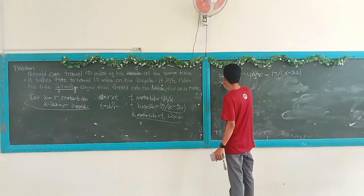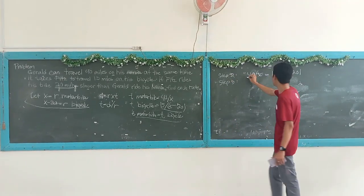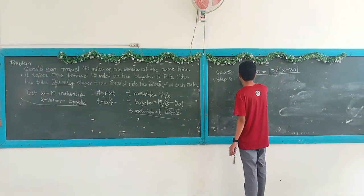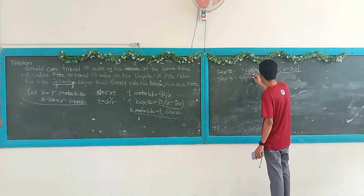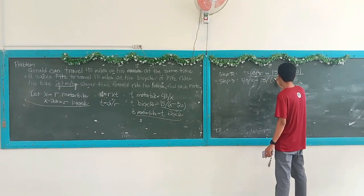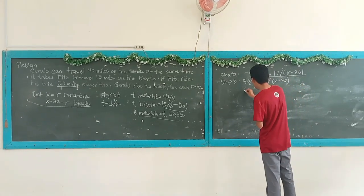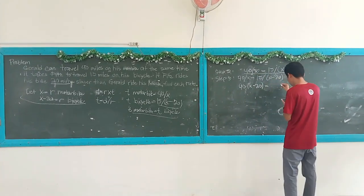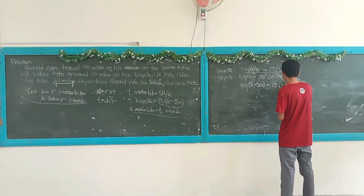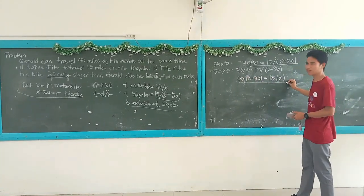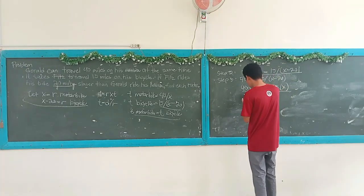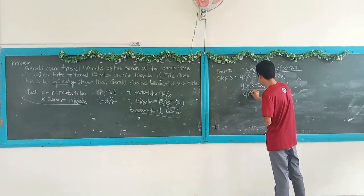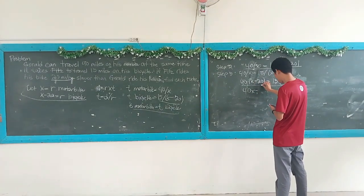Step 3 is to apply the mathematical equation that we have set up. Cross-multiplying, it will become: 40 times x minus 20 is equal to 15 times x.